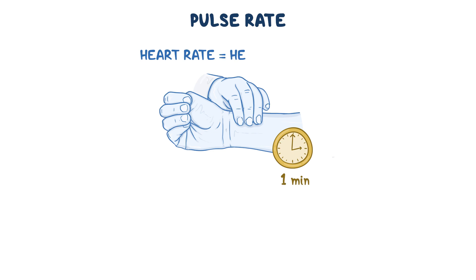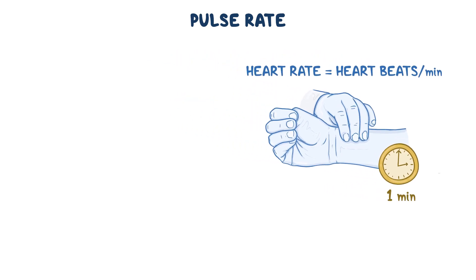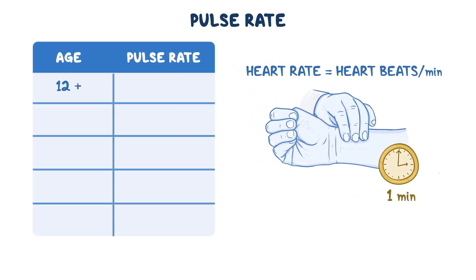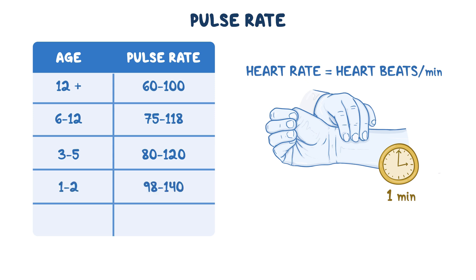The pulse rate should equal the heart rate, or the number of times the heart beats per minute. The normal pulse rate varies among different age groups. For adults and adolescents 12 years or older, the awake rate is typically 60 to 100. For school-aged children 6 to 12, it's 75 to 118. For preschoolers aged 3 to 5, it's 80 to 120. Toddlers aged 1 to 2 have a normal rate of 98 to 140. Infants under one year normally have the fastest pulse rate, ranging from 100 to 180 beats per minute.